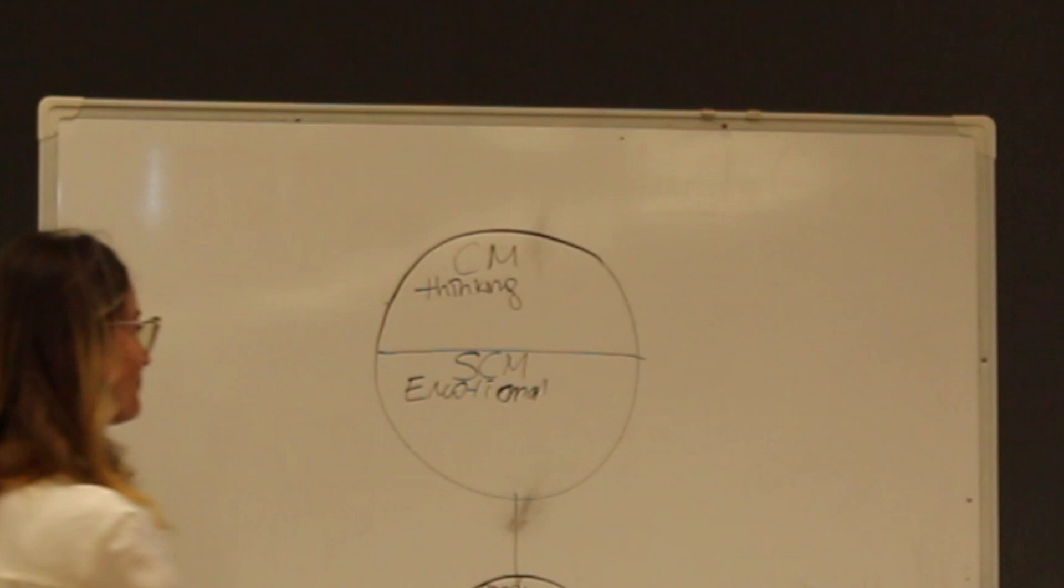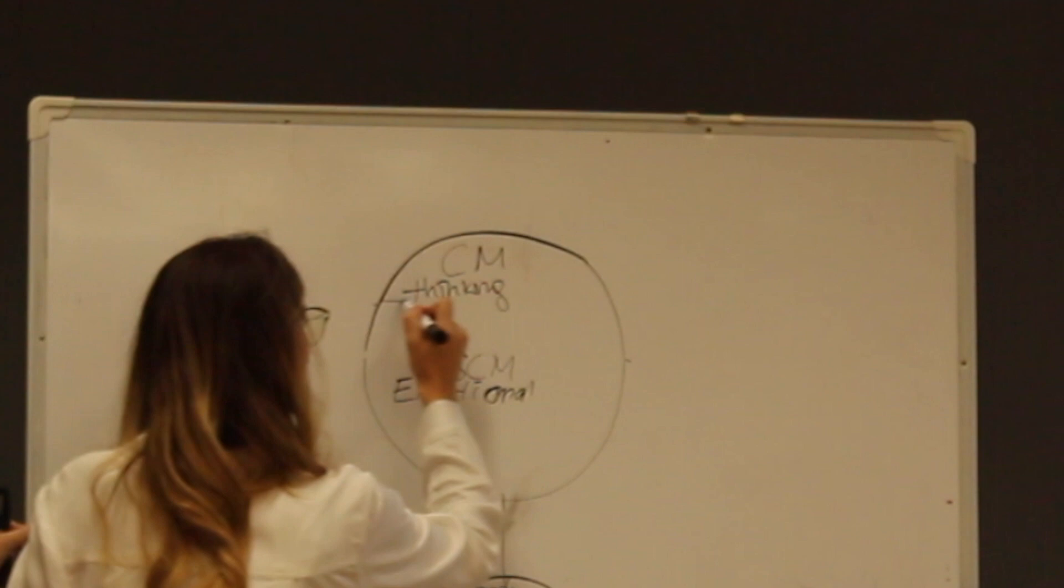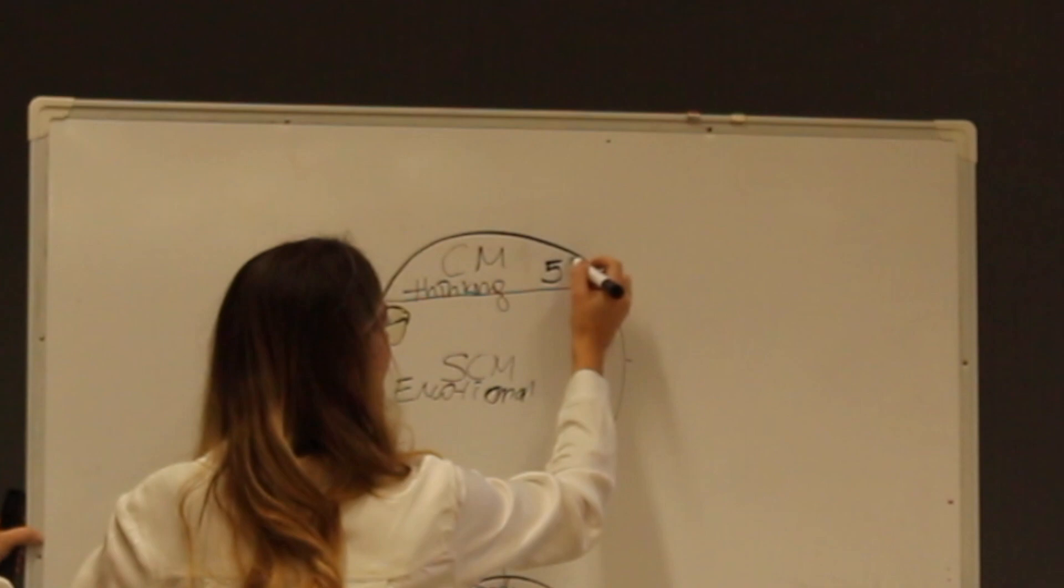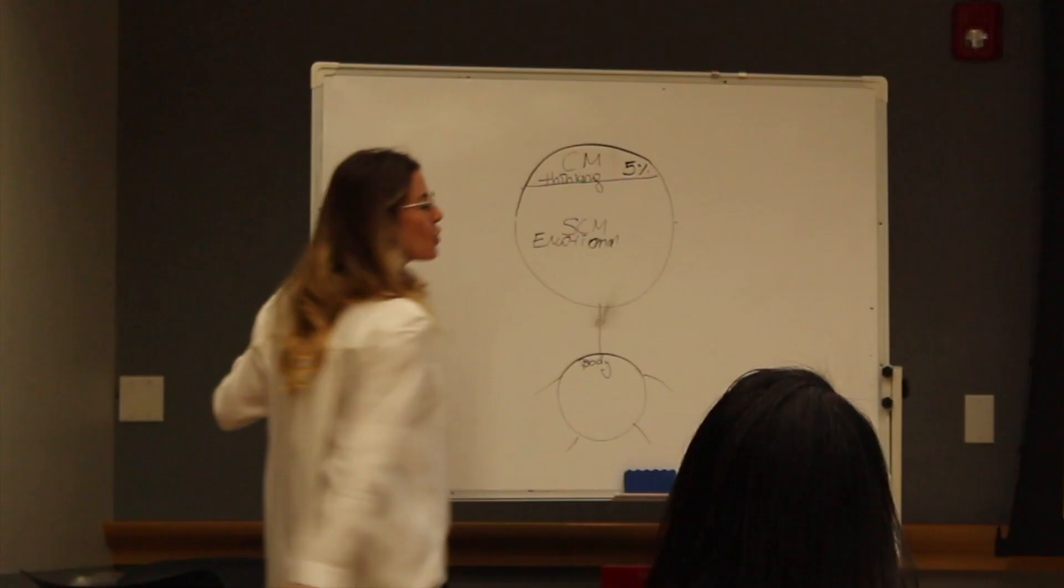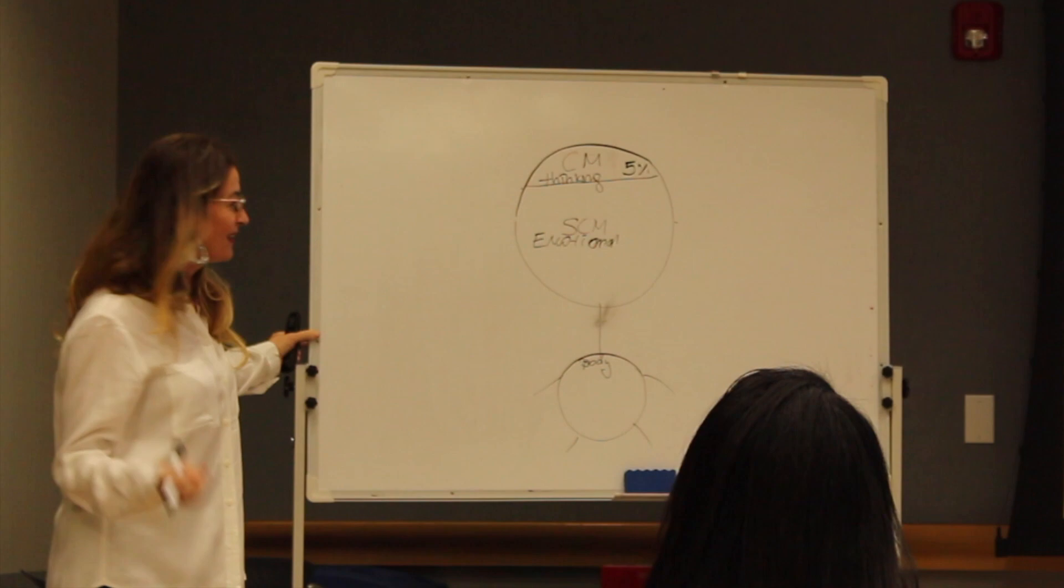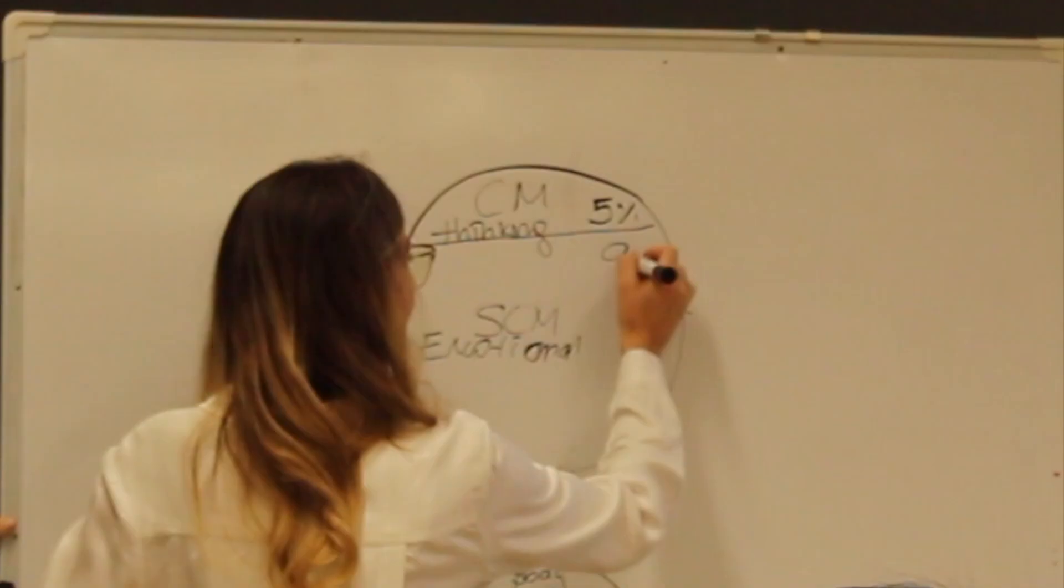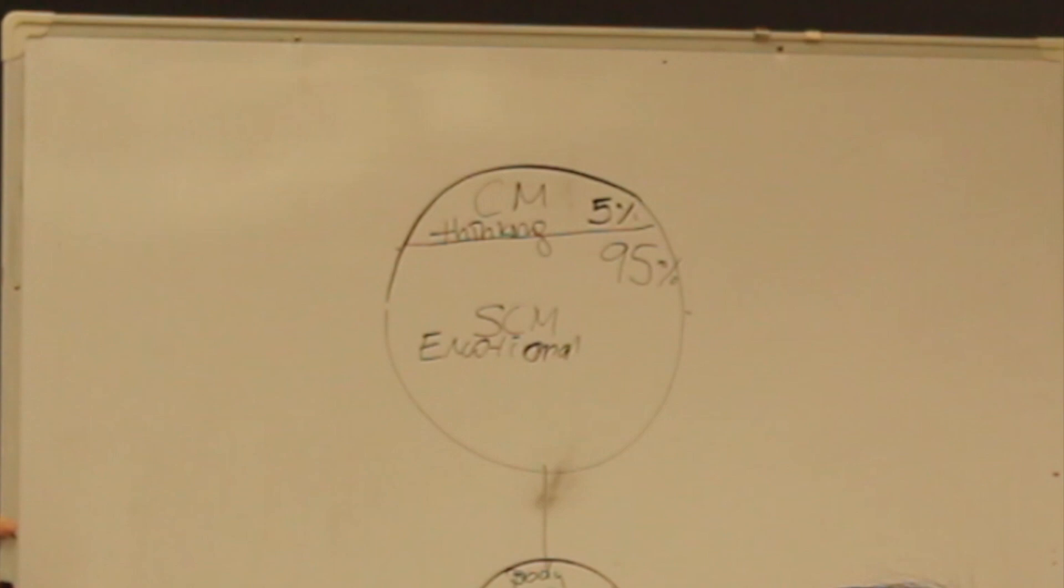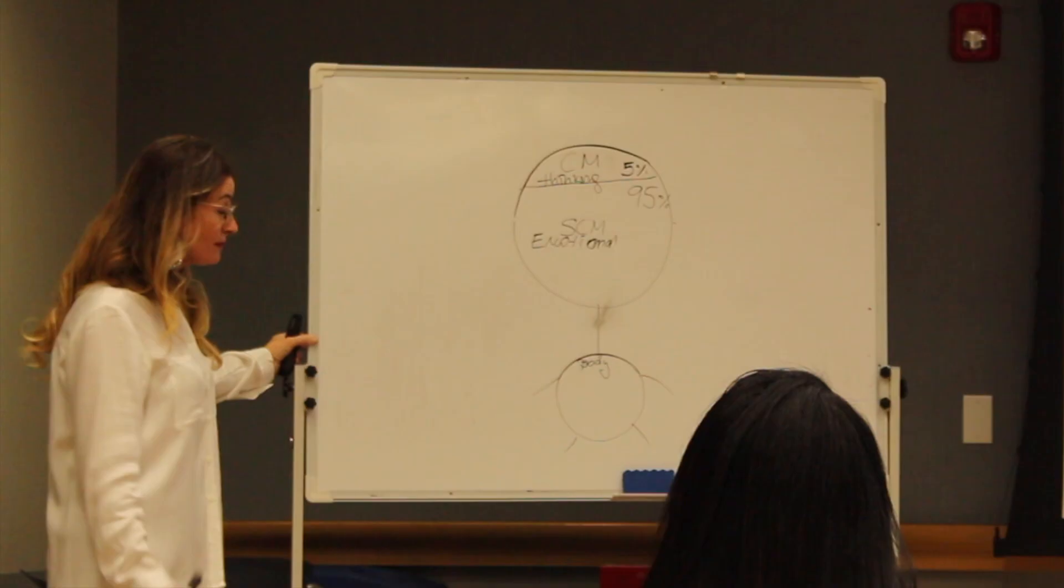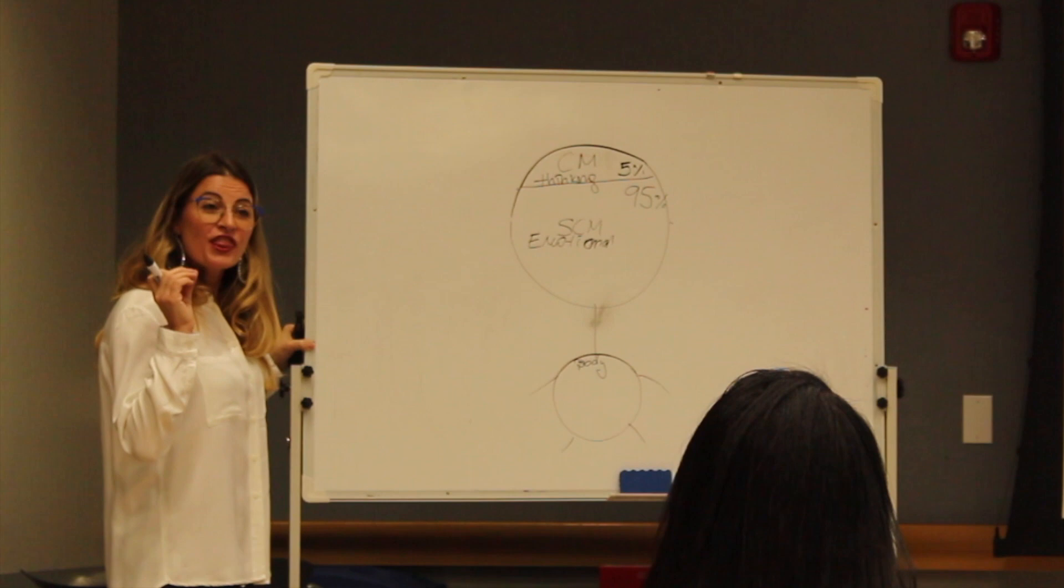Now, we are going to emphasize this. We are going to put this up here because the conscious mind is only 5% of our mind capacity. Our subconscious mind is 95% of our capacity.